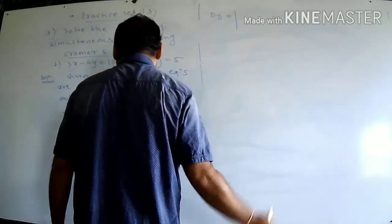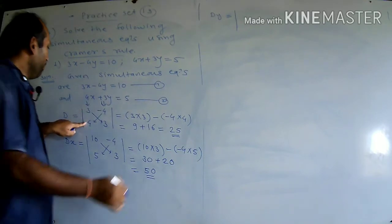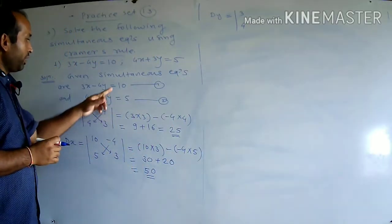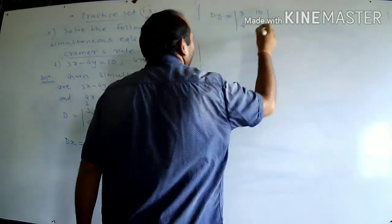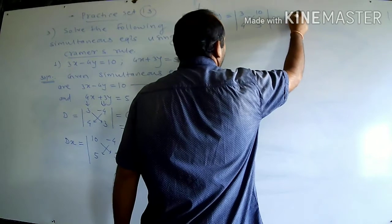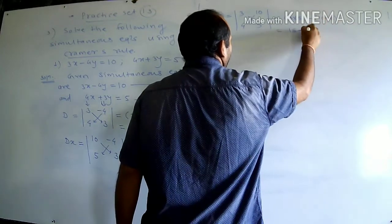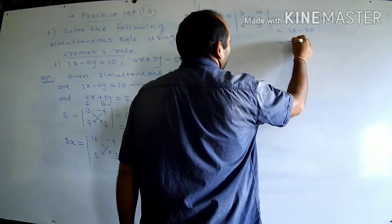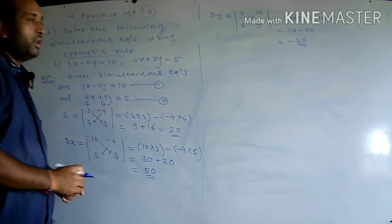For DY: first column 3, 4 remains; replace second column with constants 10, 5. Value: 3 into 5 minus 10 into 4 = 15 minus 40 = minus 25. These are the values of D = 25, DX = 50, and DY = minus 25.